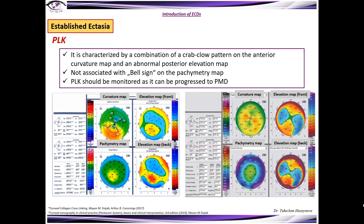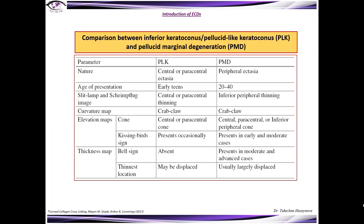PLK (pellucid-like keratoconus) is characterized by a combination of a crab-claw pattern on the anterior curvature map and an abnormal posterior elevation map with a kissing-birds pattern. There is no association with the bell sign on the pachymetry map, and PLK should be monitored as it can progress to PMD. This table summarizes the differentiation between PLK and PMD.